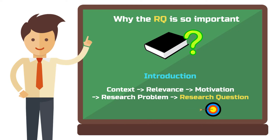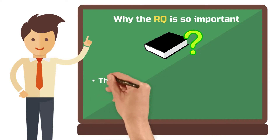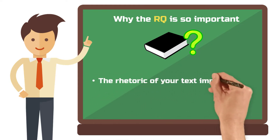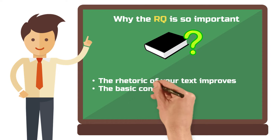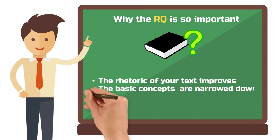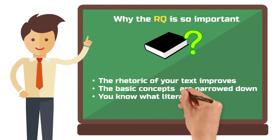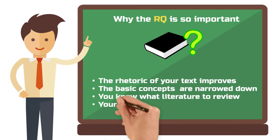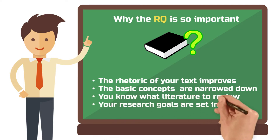The research question takes over several tasks for your paper or thesis. The rhetoric of your paper improves, the basic concepts of your paper are narrowed down, you know in which direction you have to research literature, and your research goals are set in stone.